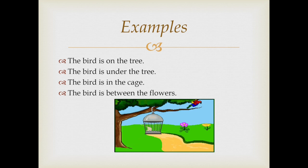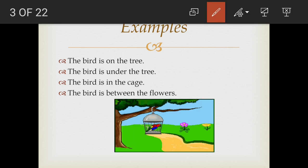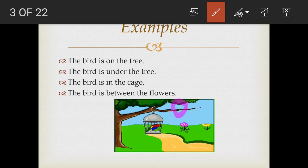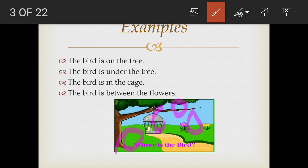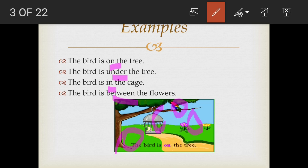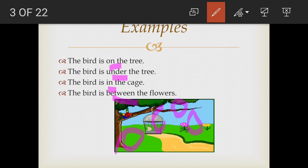Now let us see some examples of prepositions. The bird is on the tree. The bird is under the tree. The bird is in the cage. And the bird is between the flowers. So the words like on, under, in, and between — these are all prepositions.